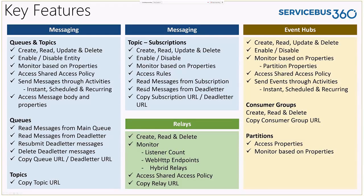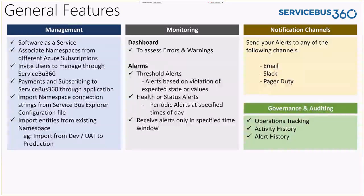Apart from messaging features, we also have a lot of general capabilities. Governance and audit is one key thing — if you have production queues and topics, you don't want support people to freely access those resources. Even though there are access rights in Azure portal, it doesn't go very granular. We wanted to do a much more granular level of access rights, and auditing is very important — if somebody changes the properties of a queue on a production system, it's important to audit it. We also introduced external notification channels like Slack, PagerDuty, and Microsoft Teams is coming in a week's time.